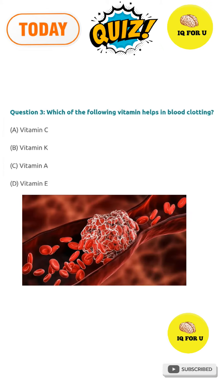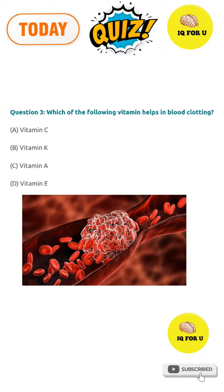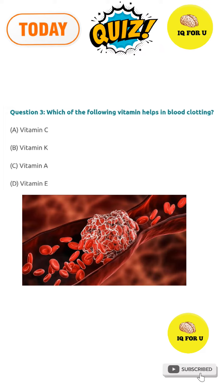Next question. Which of the following vitamins helps in blood clotting? Option A: vitamin C, option B: vitamin K, option C: vitamin A, option D: vitamin E. The right answer is option B: vitamin K.